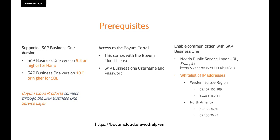Depending on which region you choose where you set up your configuration, we have two choices: the Western Europe region or the North America region. You can see the IP addresses right there which need to be open, depending on which region you choose. So these were the prerequisites for Boehm Cloud installation.